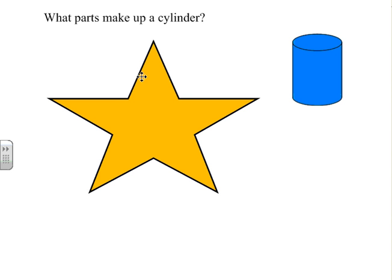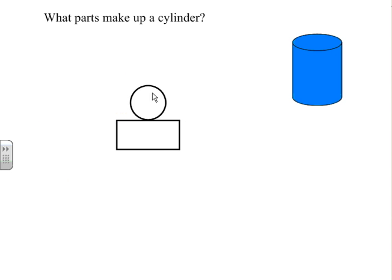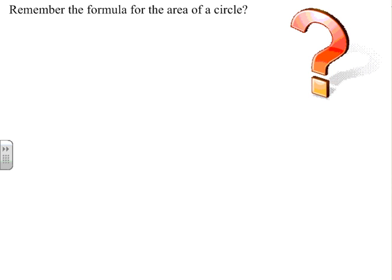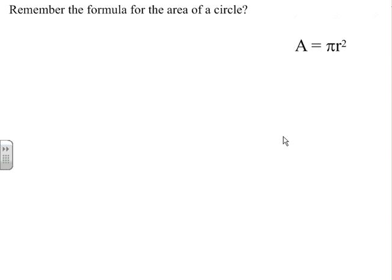So the parts that make up a cylinder are two. It's a circle, which is the base, and a rectangle, which represents the outside. Now, based on that, we have to remember the formula for the area of a circle. That is A equals pi R squared, pi being 3.14 and going on forever, but we'll stick with 3.14, and R representing the radius of the circle.